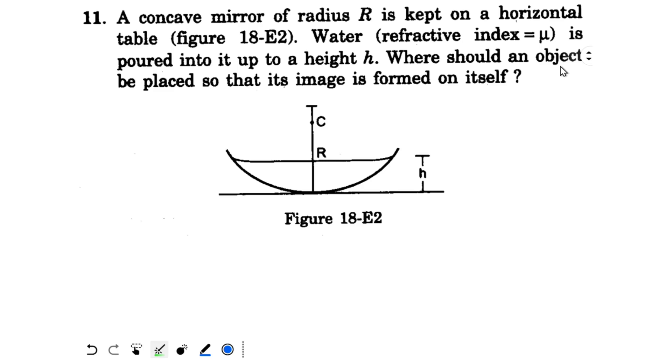We have question number 11 from chapter number 18 of H.C. Verma. A concave mirror of radius r is kept on a horizontal table. Water is poured into it up to a height h. Where should an object be placed so that its image is formed on itself? Very easy question.